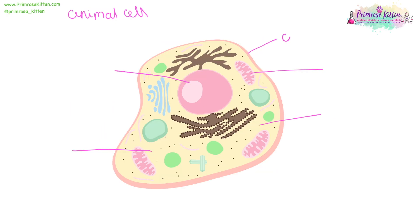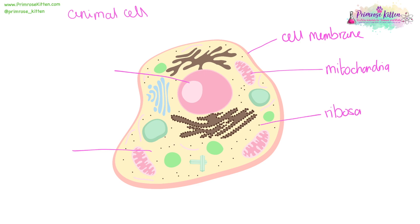Here we have our animal cell with our cell membrane, controlling what goes in and out. Our mitochondria, where energy is produced. Ribosomes, which are responsible for protein synthesis. Cytoplasm, where most of the reactions take place. And our nucleus, which is the control centre of the cell — that's where the DNA is held.